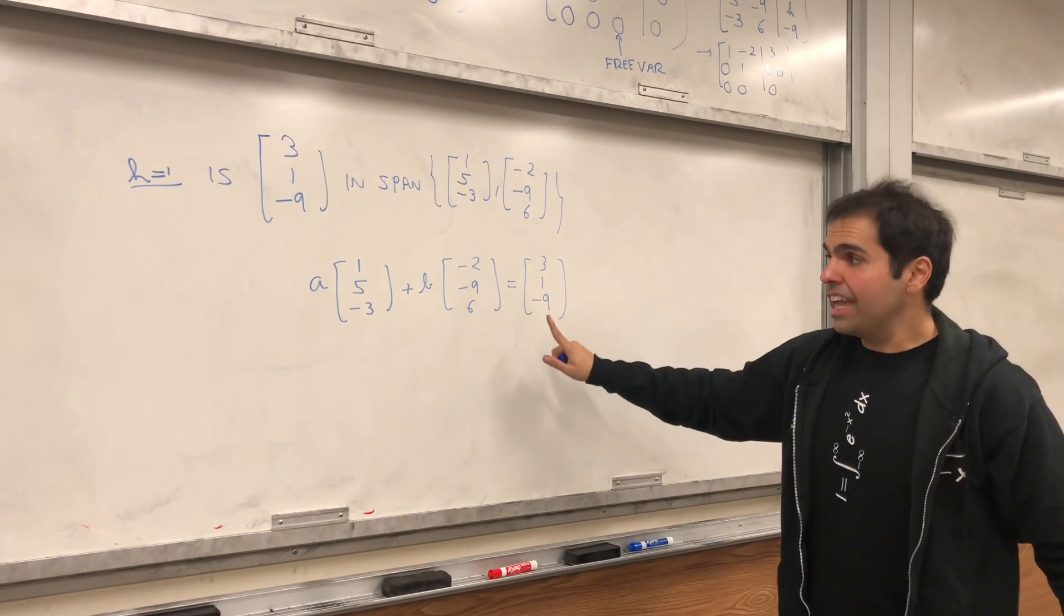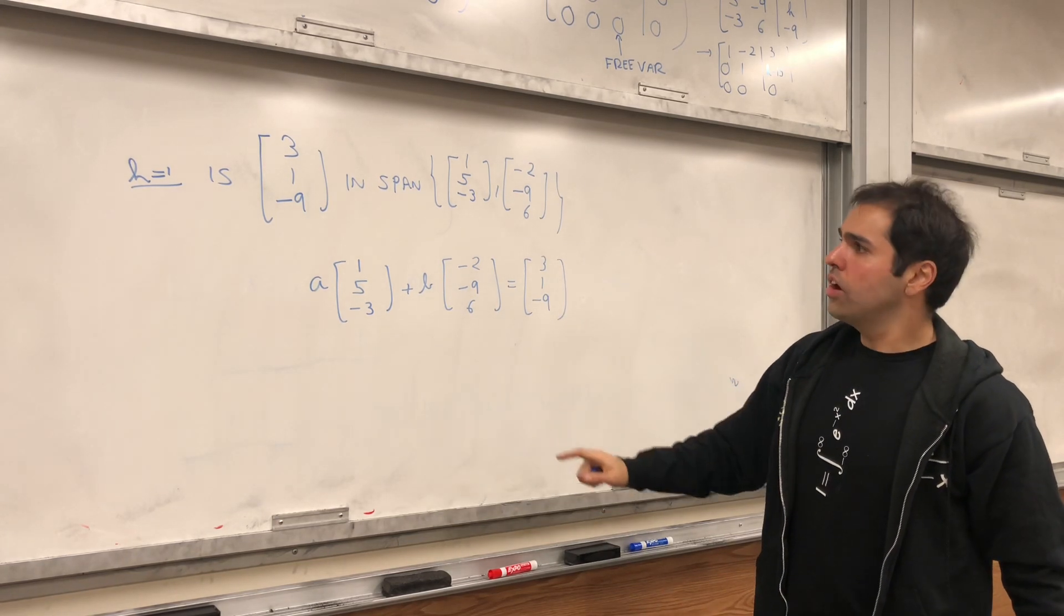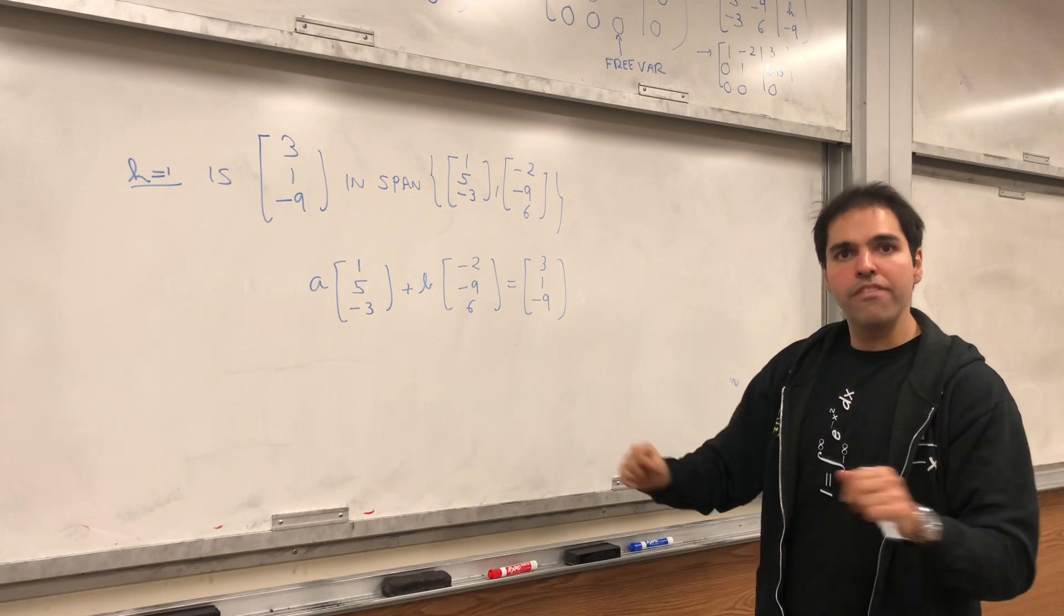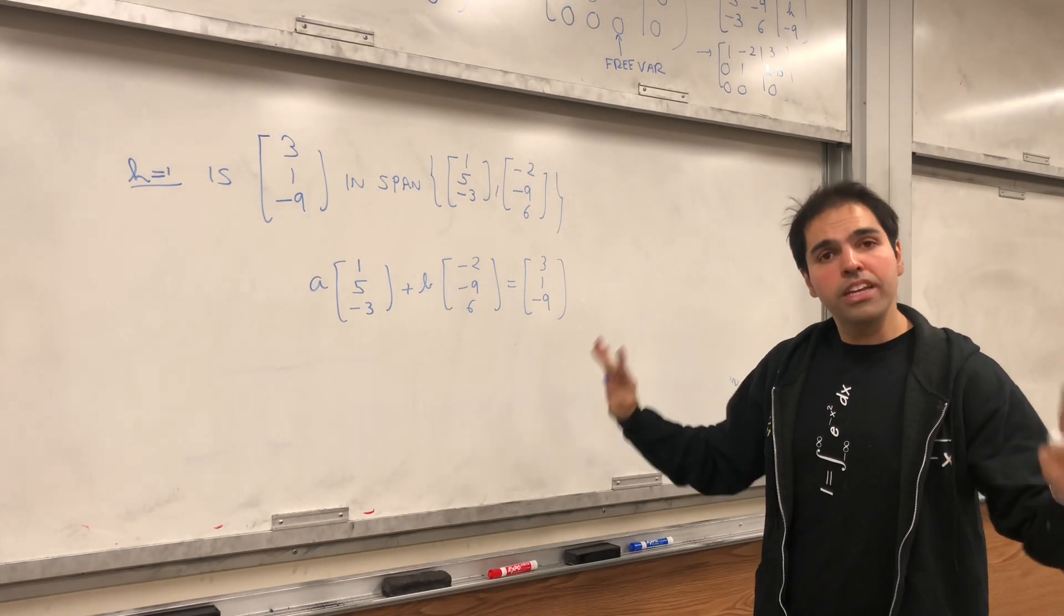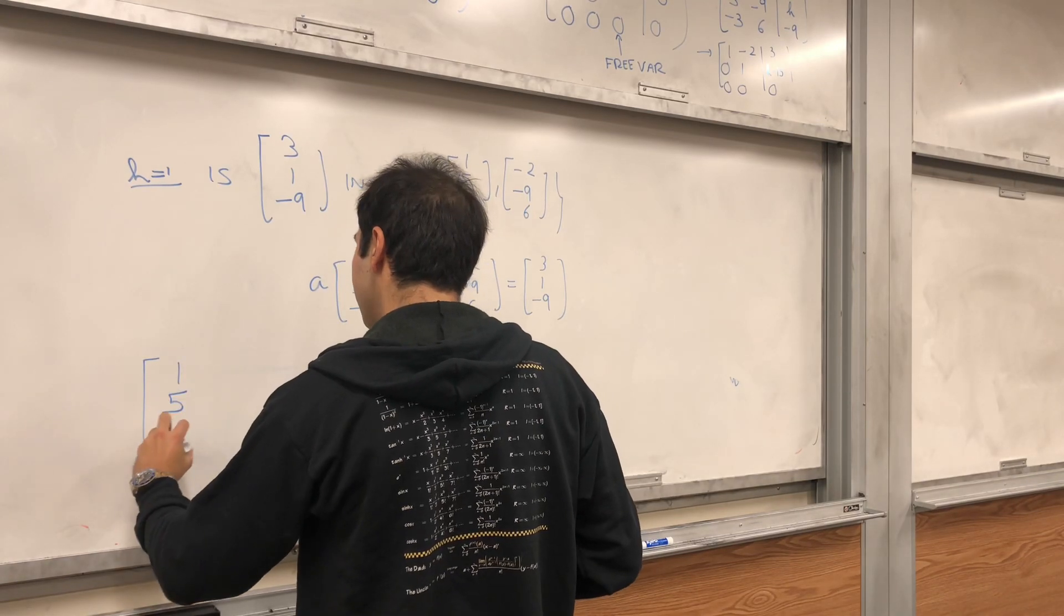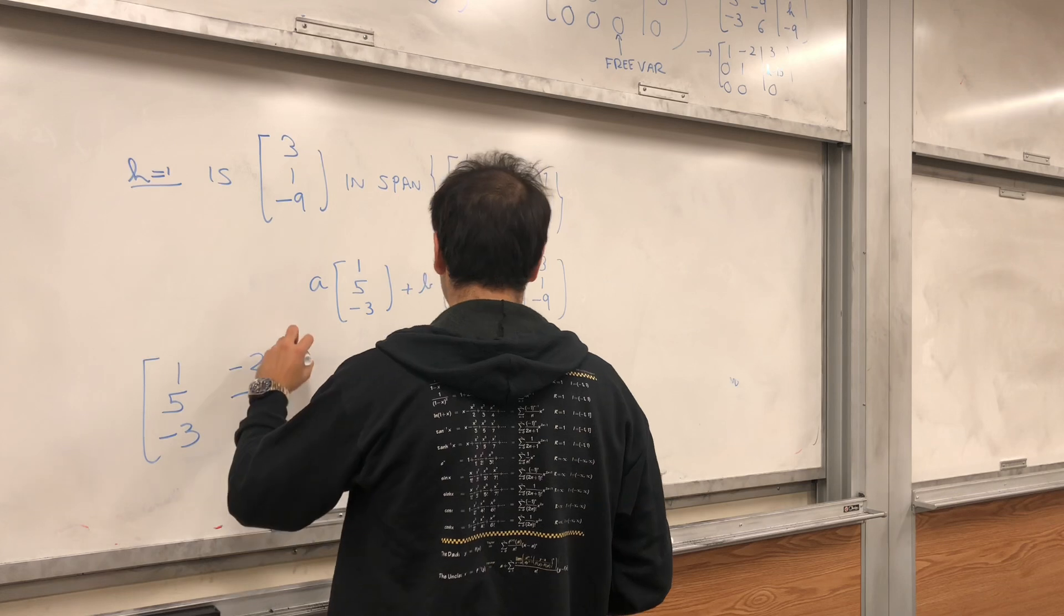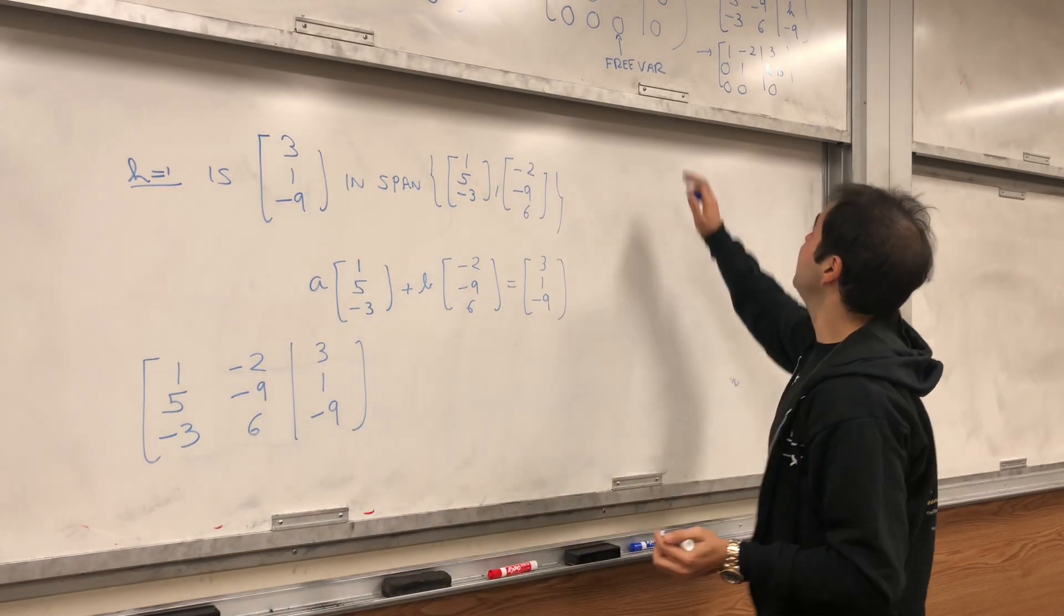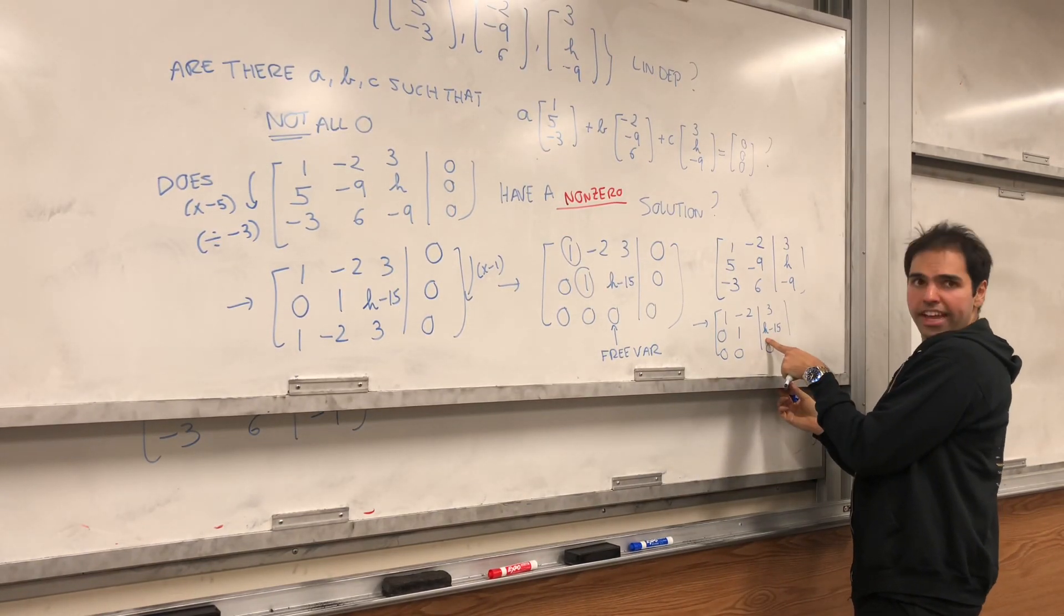One little remark. So technically, the question is, are there a and b such that this is true? Technically, we don't have to solve the system. We just need to check if there's a pivot in every row of this matrix. But just for sake of completeness, let's try to solve it. So if we do 1, 5, minus 3; minus 2, minus 9, 6; and then 3, 1, minus 9. The good thing is, we've already done that. We already had this, but with h equals one.